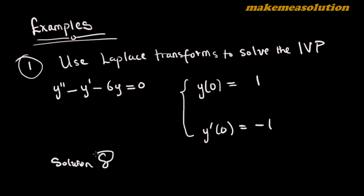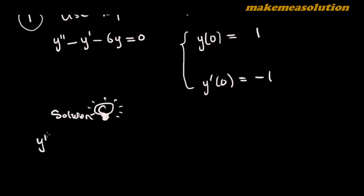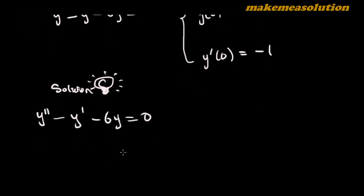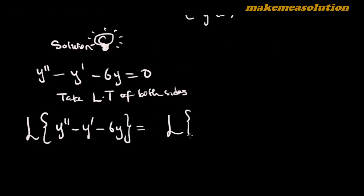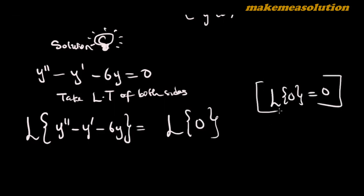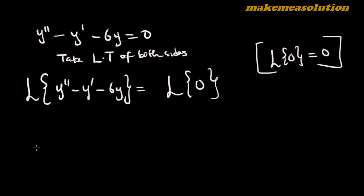The first thing you need to do, anytime you are given such a differential equation — y'' minus y' minus 6y equals zero — and you want to use the method of Laplace transforms, is to take the Laplace transform of both sides. Taking the Laplace transform of both sides, the left-hand side equals the Laplace transform of zero, which is zero. Please take note of that.